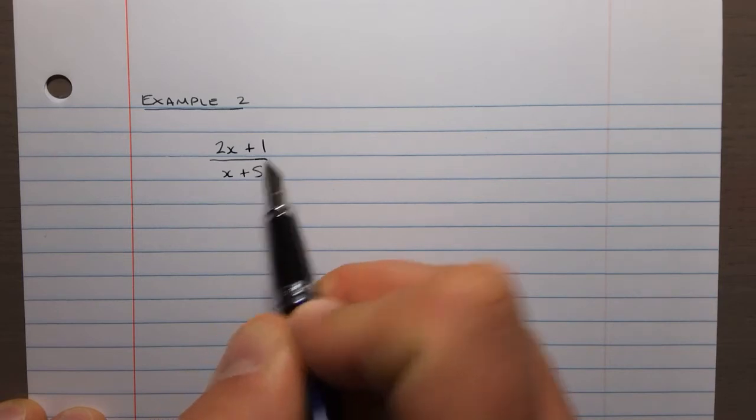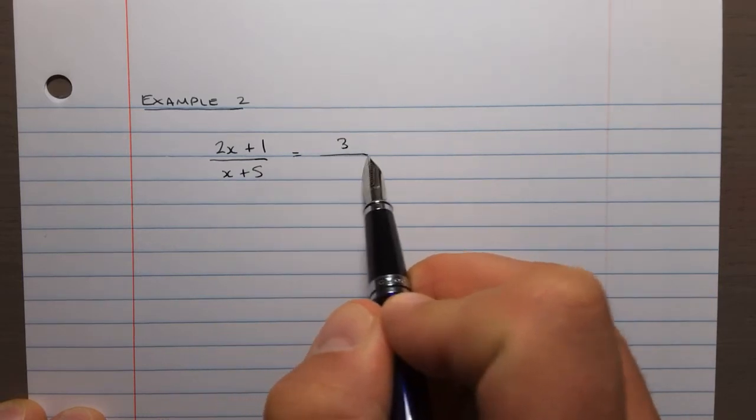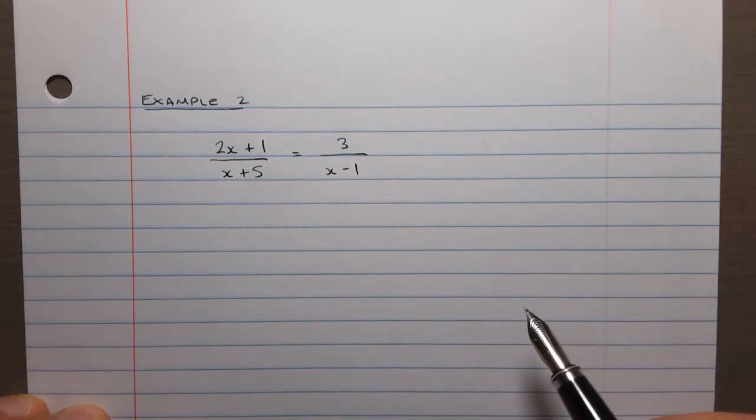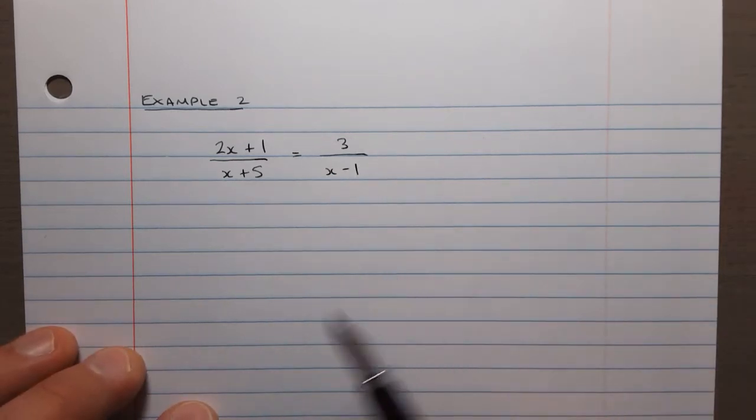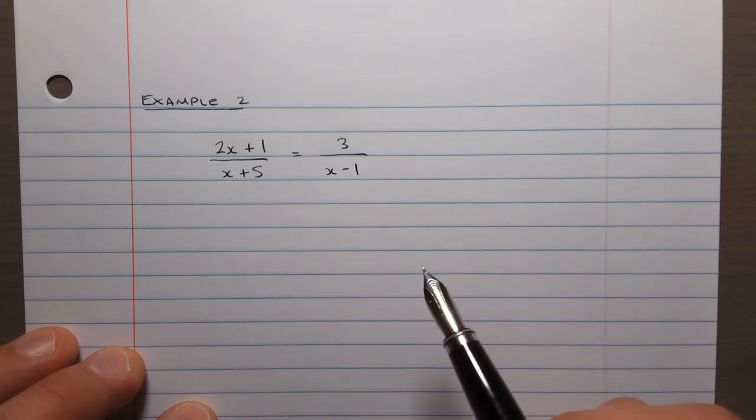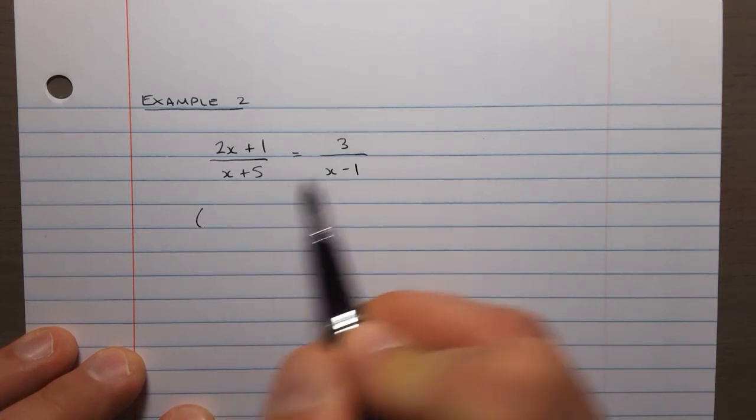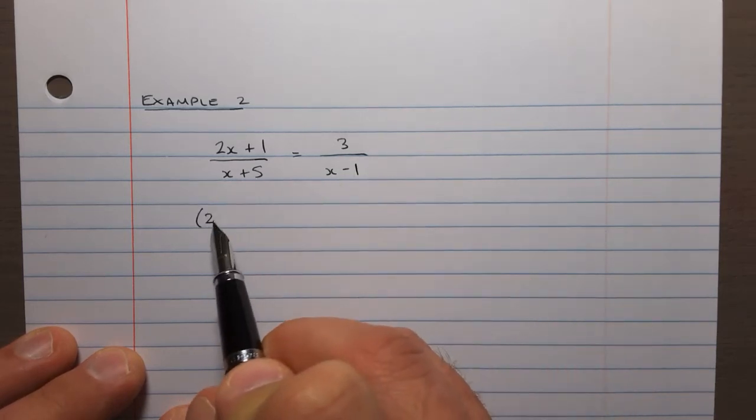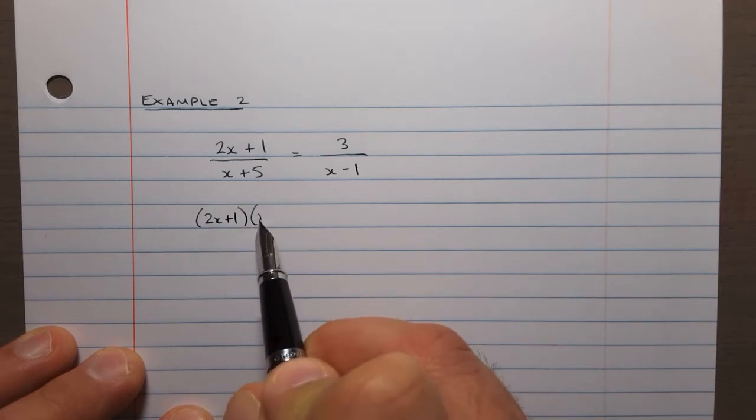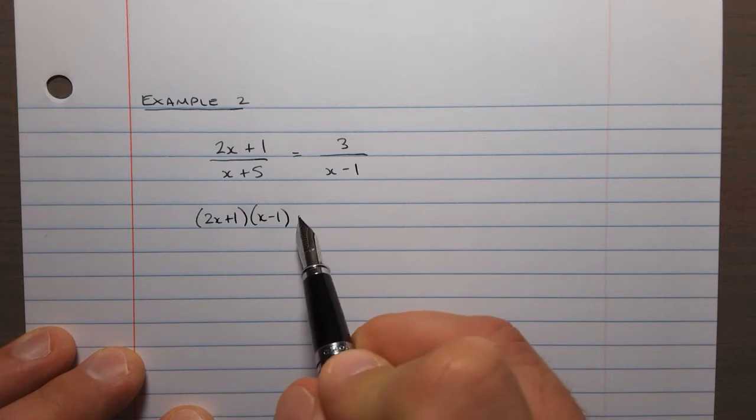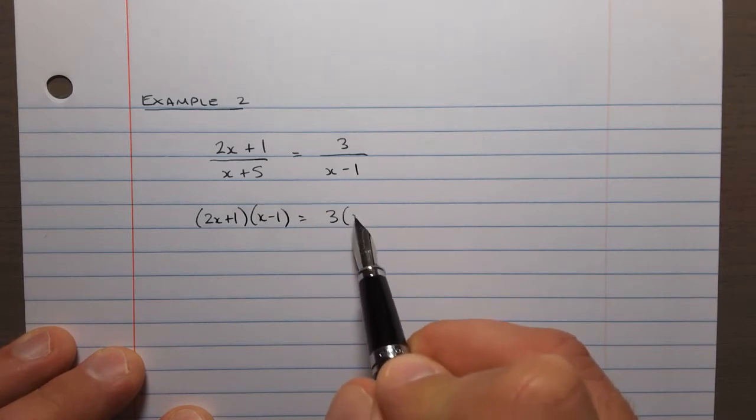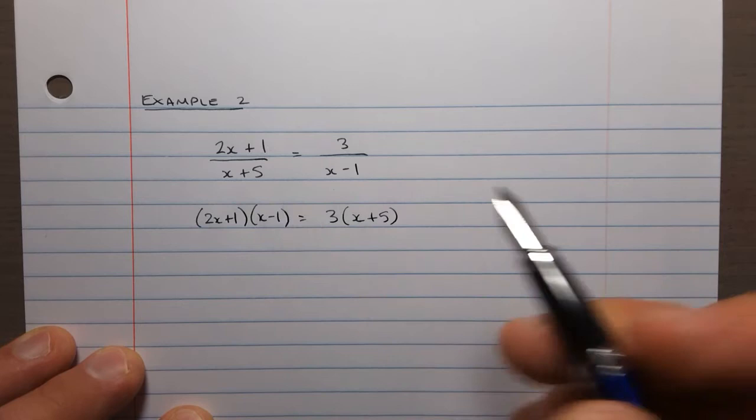All right, second example, a little bit more complex looking. 2x plus 1 divided by x plus 5, and on the other side we have 3 divided by x minus 1. So we're going to use the same strategy, multiplying both sides by the denominators to clear those denominators. So I'm going to write this out just like this now. I'm not going to write out x plus 5 on each side, I'm just going to write it out as a numerator over there, you'll see. So 2x plus 1, we'll be multiplying both sides by x minus 1, but it will divide out over here. And then on this side, multiplying by x plus 5, and it will have divided out over here.